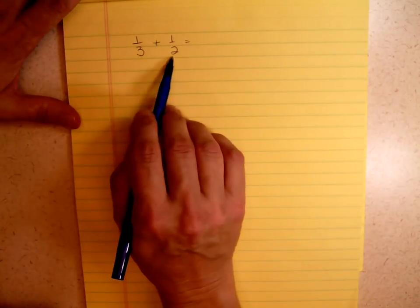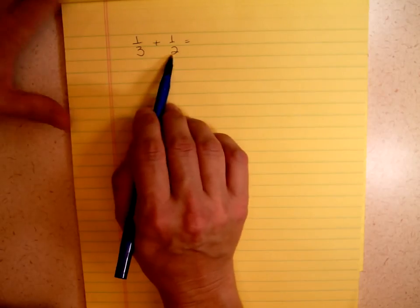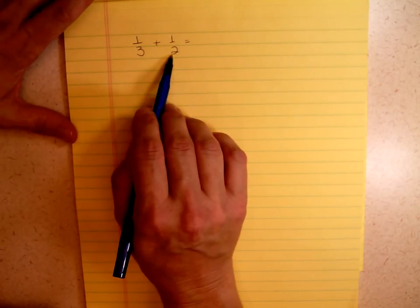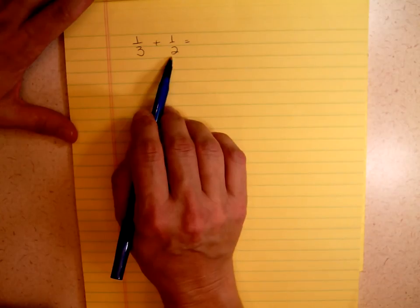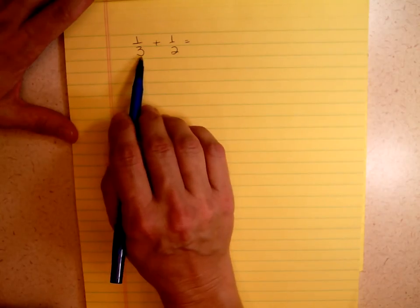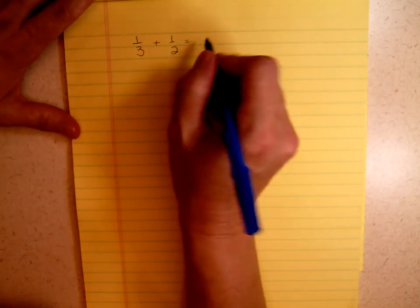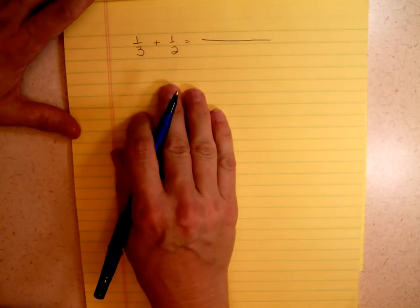If you look at 3 and 2, you may immediately recognize that 6 is the lowest common denominator, but let's pretend that you didn't recognize it. I know that 2 isn't a factor of 3, and 3 isn't a factor of 2, and that's going to lead me to want to use my alternate algorithm.